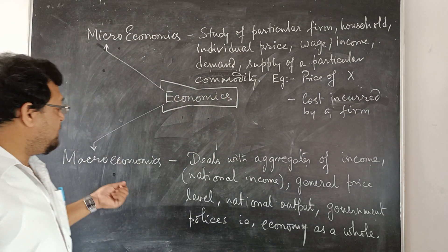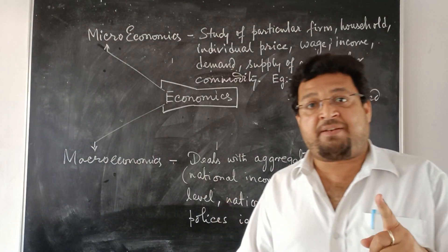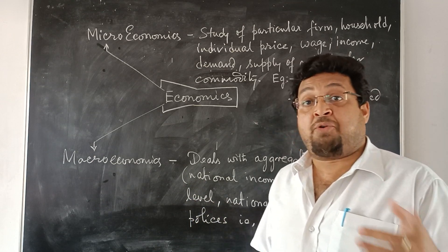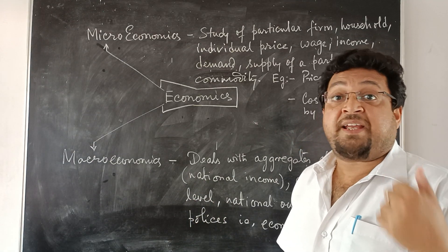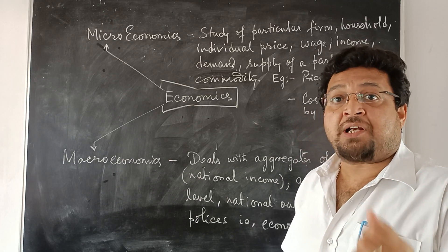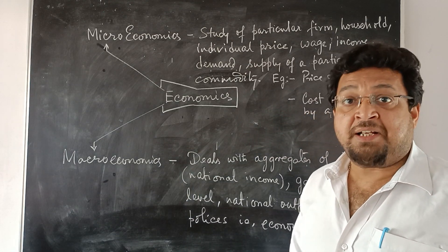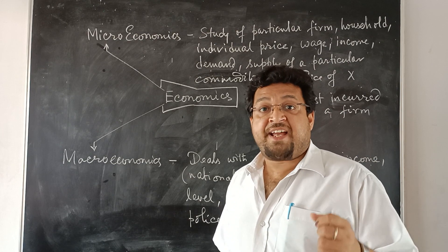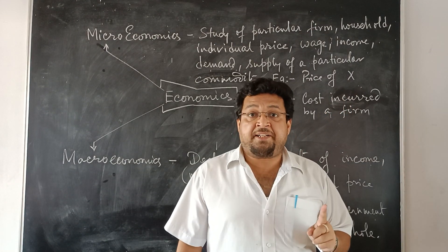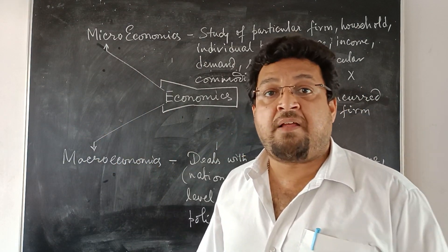Whereas macroeconomics deals with the aggregates as a whole. The same parameters like income, but national income — not individual income. Demand, like aggregate demand, the entire demand. Output — not output by a single firm, but the total output, national output. Income — national income. Price — not the price of a commodity X, but the price of the entire, taking as a whole basket of goods — that is the general price level.